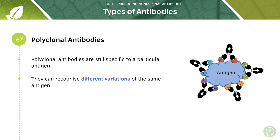The way I like to remember this is that the stem 'mono' means one, and the stem 'poly' means many. Therefore monoclonal antibodies can only bind to one particular type of antigen, whereas polyclonal antibodies can bind to the many variations of that same antigen. Don't worry too much about the difference between mono and polyclonal antibodies, because the AQA specification doesn't actually require you to know the difference - I'm just explaining it here to make it clearer what a monoclonal antibody is.